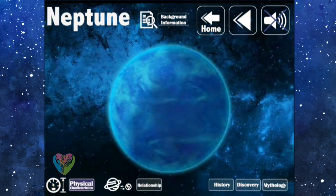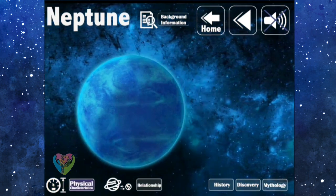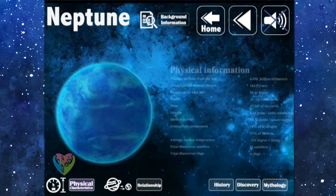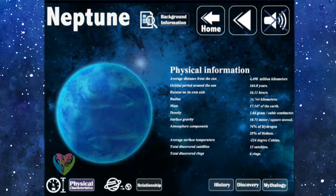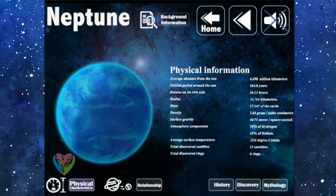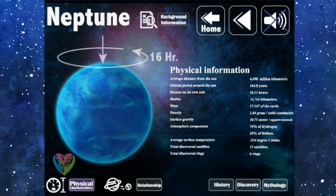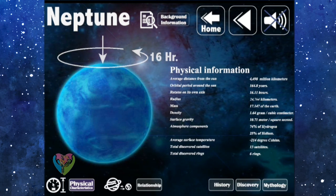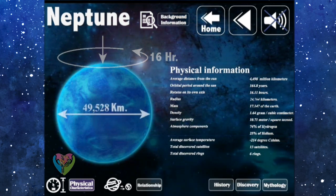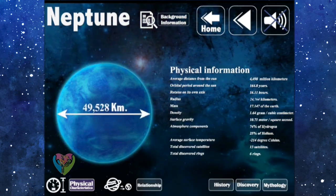Physical Information: The average distance to the sun is 4,498 million kilometers. The orbital period around the sun is 164.8 years. It rotates on its own axis in 16.11 hours.